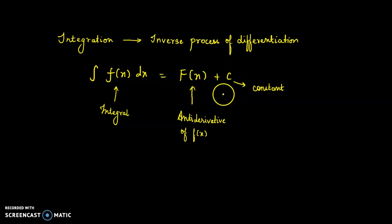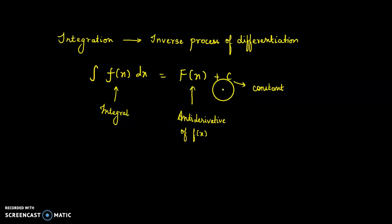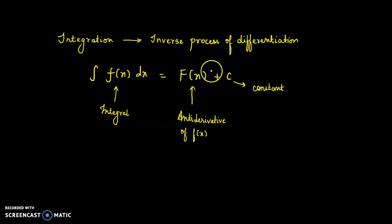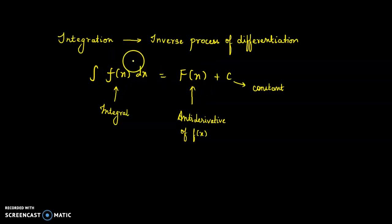Now, c is the constant. Whenever you differentiate something, you will get a constant for sure. So we call this integration, and if you differentiate this anti-derivative, you will get the integral back. That is why it is the reverse process of differentiation.